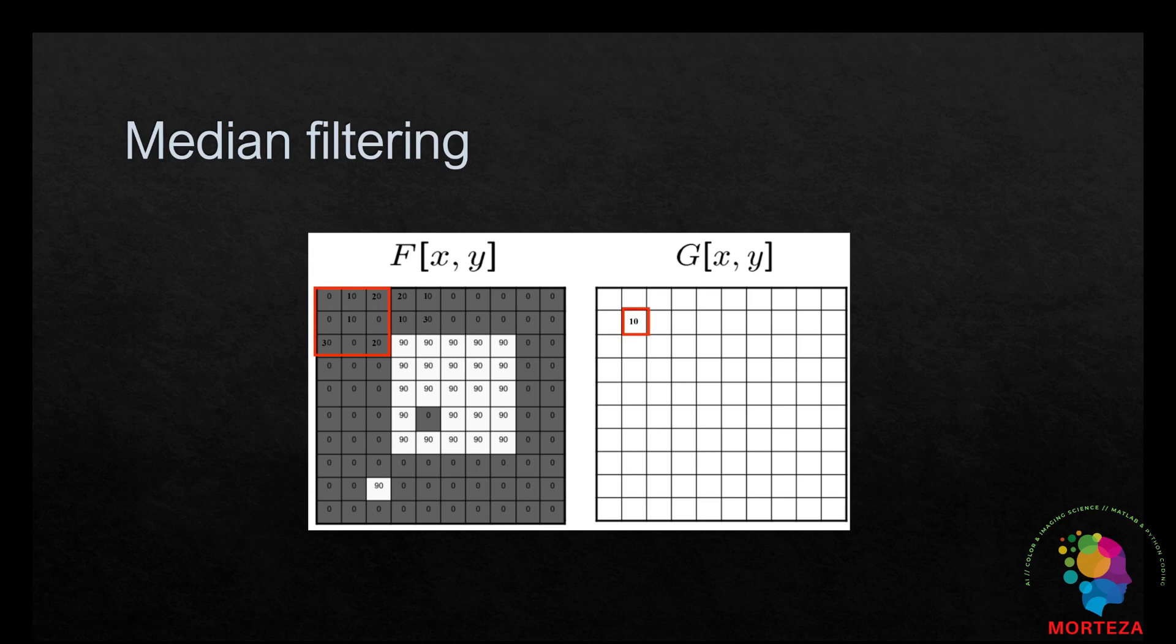The main idea of the median filter is to run through the signal entry by entry, replacing each entry with the median of the neighboring entries. The pattern of neighbors is called the window, which slides entry by entry over the entire signal. Here is how this filtering works.